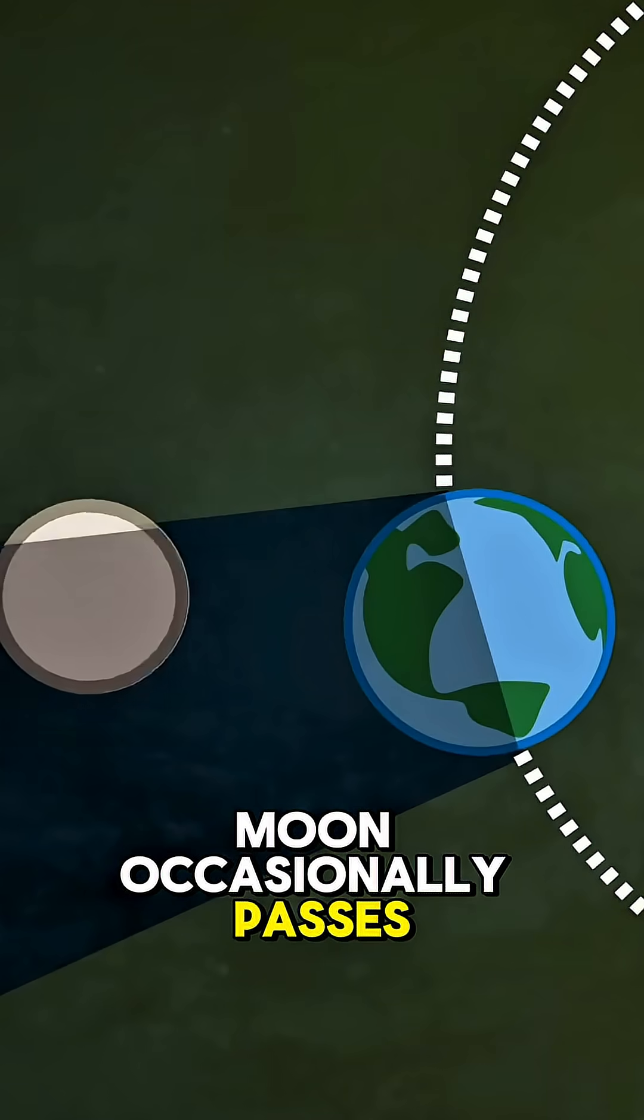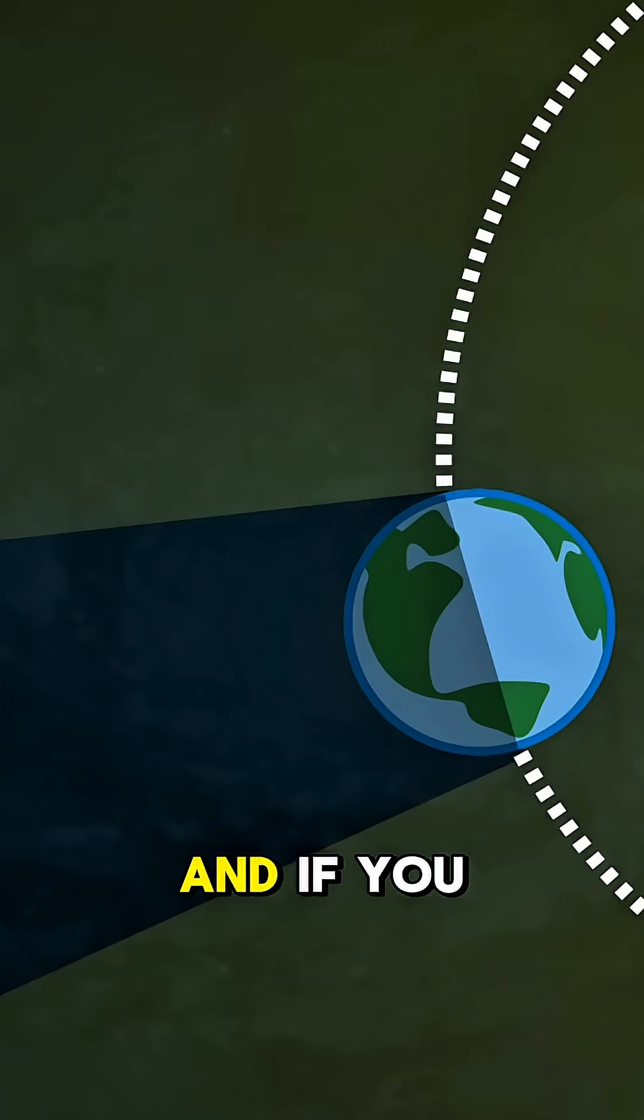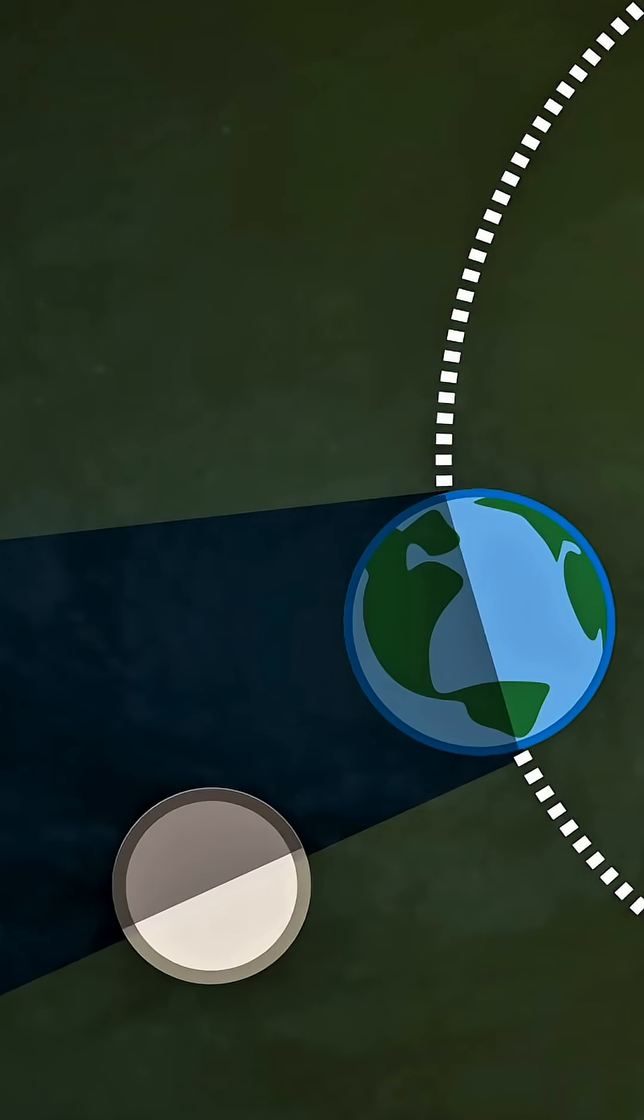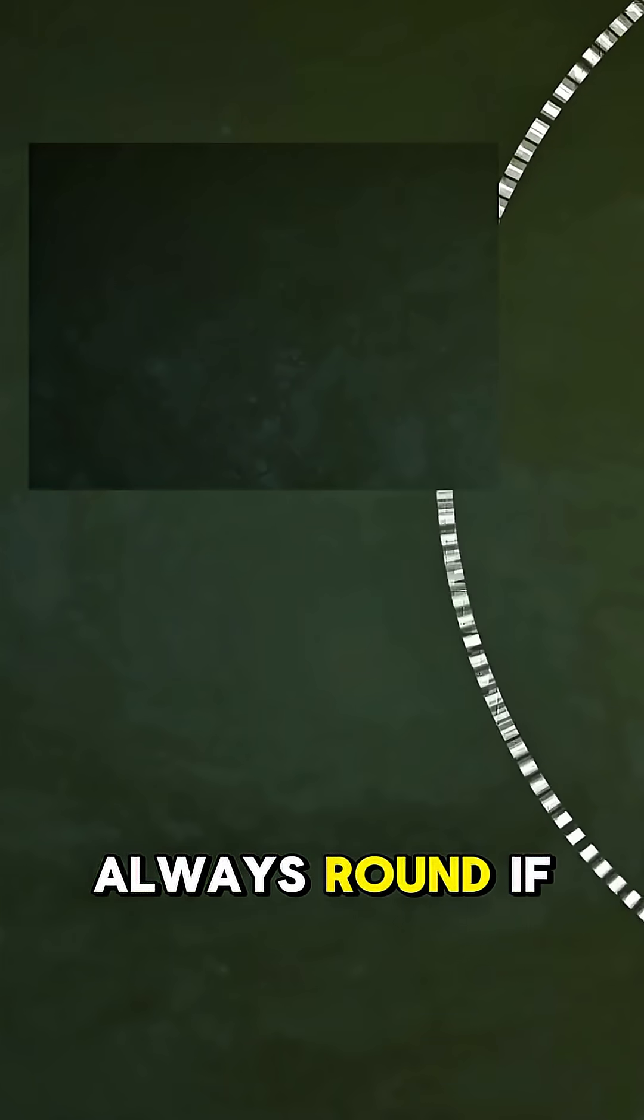So the moon occasionally passes through that shadow. And if you see the shape of Earth's shadow on the moon, it is always round. Always round.